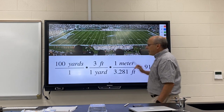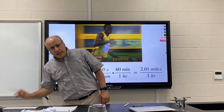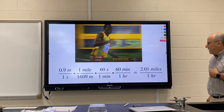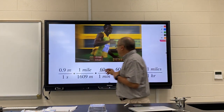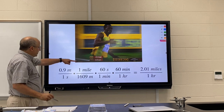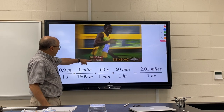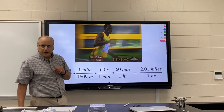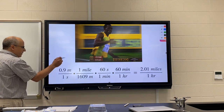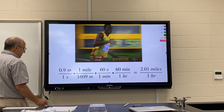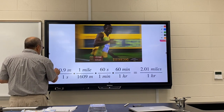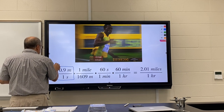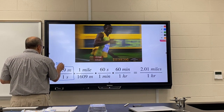Let's try one more, and this one's kind of tricky — you may not have ever done one like this before. Let's say we have Usain Bolt running into a headwind that is 0.9 meters per second, and we want to convert it to miles per hour. To do this with factor label is kind of tricky. This is our original fraction.